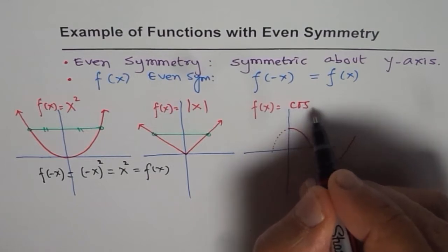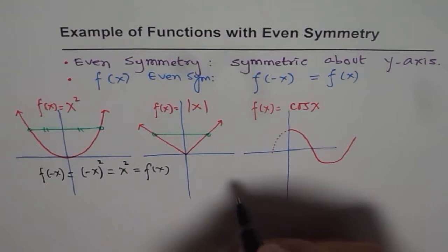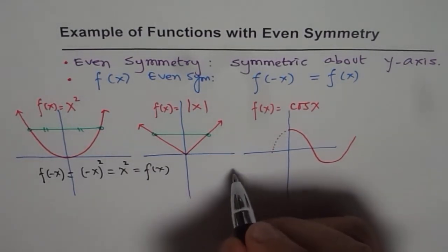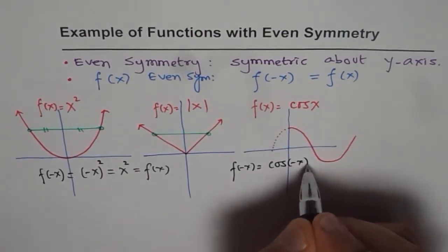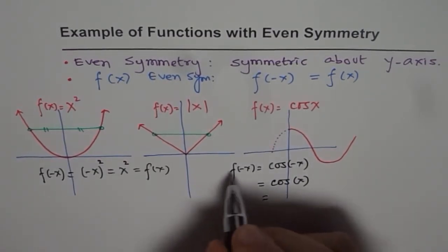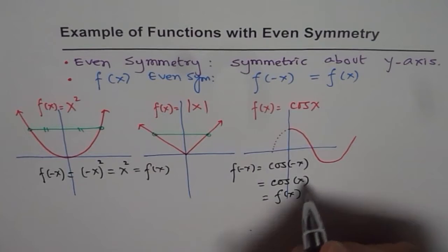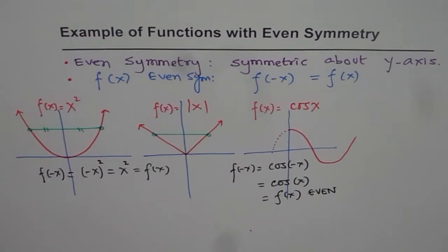So f(x) equals cos(x). Now, cos(x) has even symmetry. What is f(-x)? f(-x) equals cos(-x), which equals cos(x). And since f(-x) equals f(x), we say it has even symmetry. So f(x) equals cosine x is also an even function. That's the trigonometric function which is even in nature. So these are even functions.